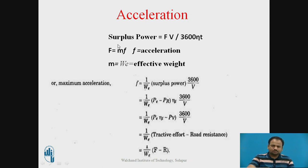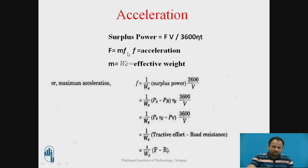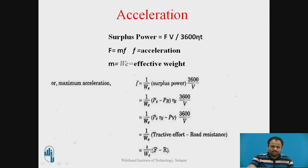Surplus power is F times V divided by 3600, times the weight of the vehicle, where F is the tractive effort. Sometimes instead of F we take the resistance. Now, F equals M times A, where acceleration is denoted as A and M equals W_E — the effective weight of the vehicle. Therefore, acceleration equals surplus power divided by W_E, where surplus power is the difference between power available at the engine and power required. Taking transmission efficiency η_T into account, we get tractive effort from power available and road resistance from power required. This is the formula to calculate acceleration for the vehicle.